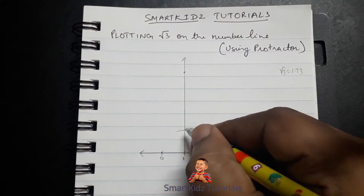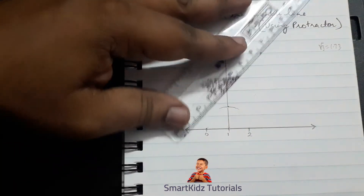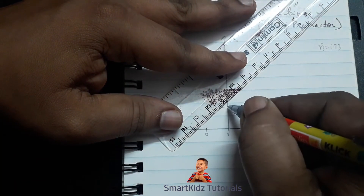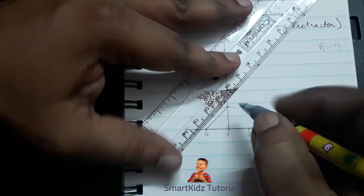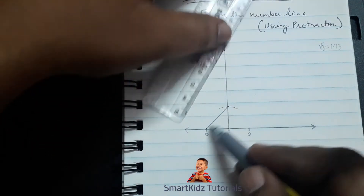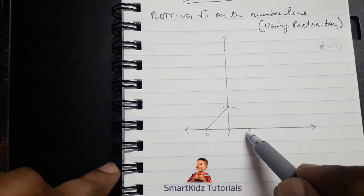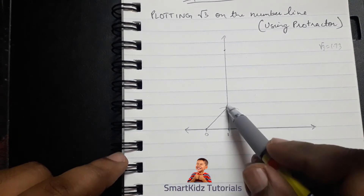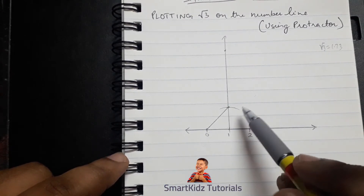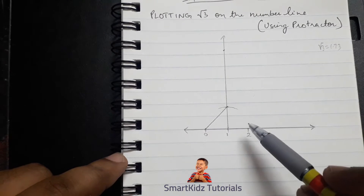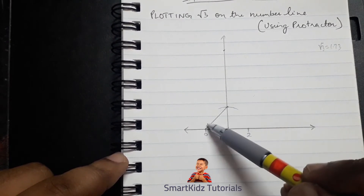We mark the intersection of the arc and the line and join this point to zero. Now this is root 2. We don't have to mark root 2 on the number line — we can continue, because we are interested only in root 3. So what I'll do is, just like how we drew a perpendicular here, we now have to draw a perpendicular to this particular line.